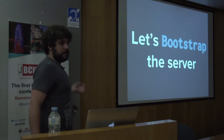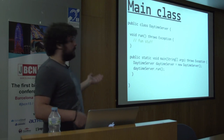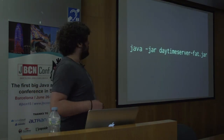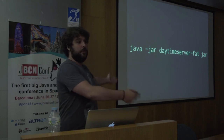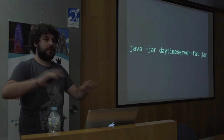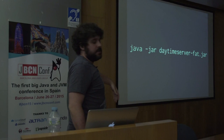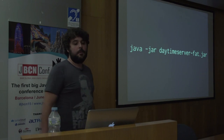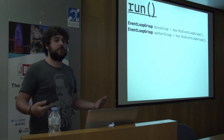Now let's bootstrap the server. It's just a main class with a main method - you run it as a regular JAR. You can call it a microservice if you want. You have to implement the run operation to actually bootstrap the server. Here's where Netty comes in again. You see there's an EventLoopGroup - Netty's way to handle threads. This is like Netty's version of an executor service from the JDK, but with many power-ups.